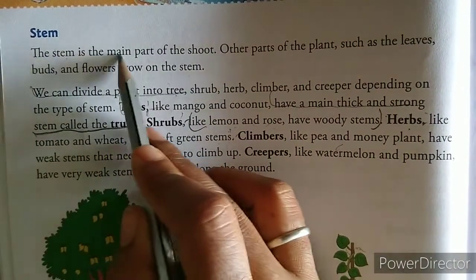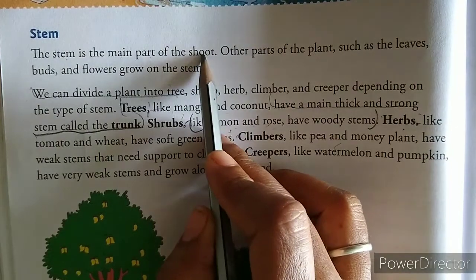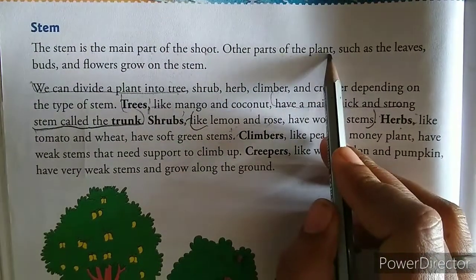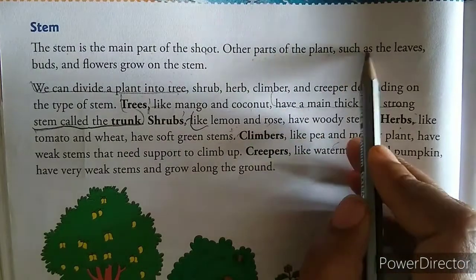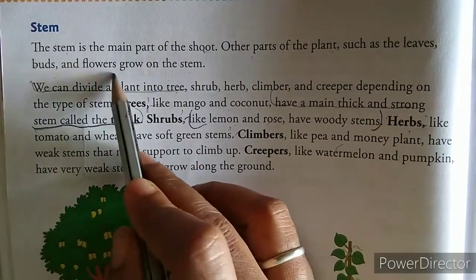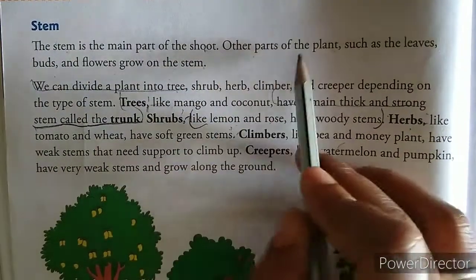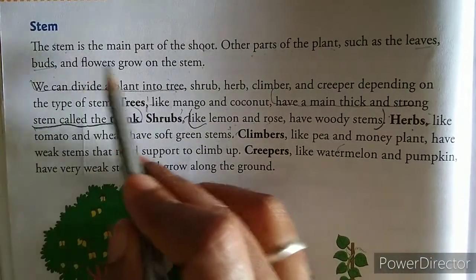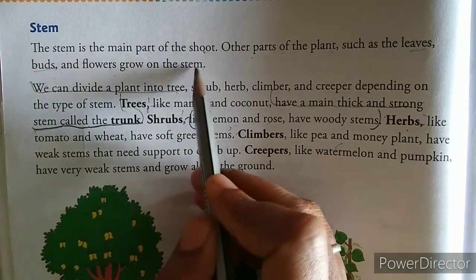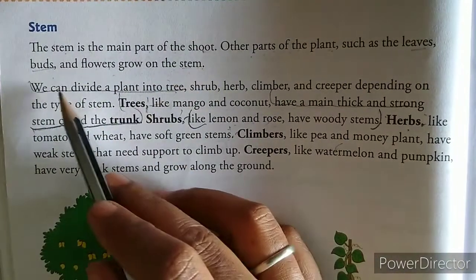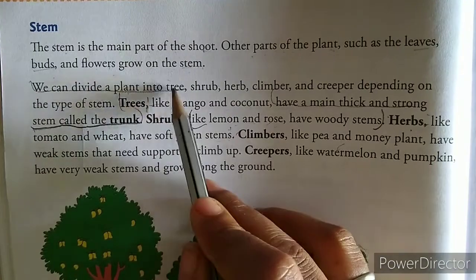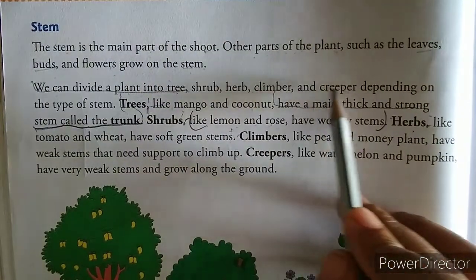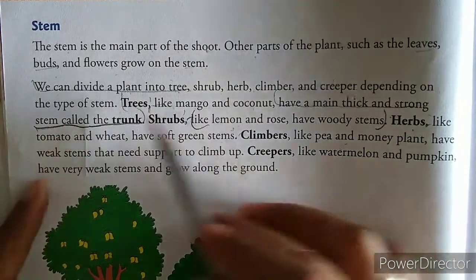Stem: the stem is the main part of the shoot. Jo stem hoti hai woh shoot ka main part hoti hai. Other parts of the plant such as leaves, buds, and flowers grow on the stem. We can divide plants into tree, shrub, herb, climber, and creeper depending on the type of stem.